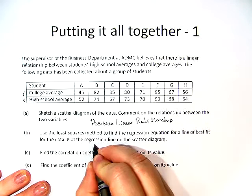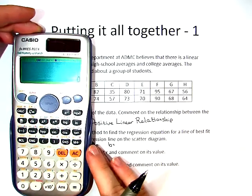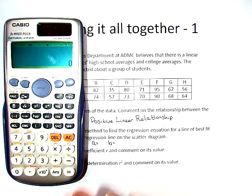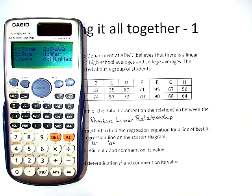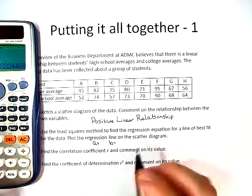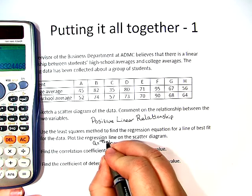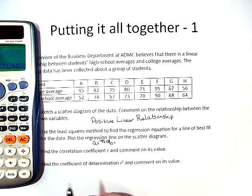Now we need to figure out what a is and what b is. So we go back to our calculator and we're going to do shift 1, regression, and find a. We get a equals negative 45.08. Sorry, that kind of ran into my b.